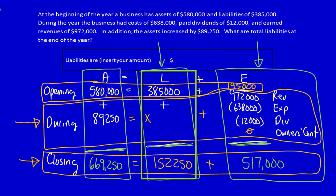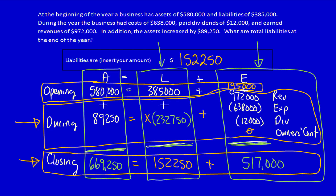I can then use this column — take $385,000, subtract $152,250, and determine the change in liabilities: negative $232,750. The question asked for liabilities at the end of the year, which are $152,250 — which I already calculated. In the next video, I'm going to do a more complicated solve for unknown numbers.